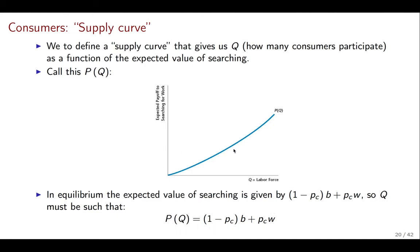The equilibrium q is found where p(q) is exactly equal to that value — you find on this axis what the value of joining the labor force is going to be. That finishes this video, and in the next video we're going to talk about the firm.